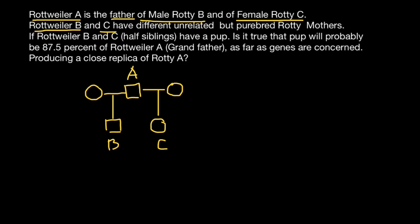Rottweiler B and C have different, unrelated but pure breed Rottie mothers — exactly what we see on this pedigree. Rottweiler B and C are half siblings. They have a pup, so let's add the pup here. We use a double line to show consanguinity mating — mating of two close relatives — and here is the result. The pup is of unspecified sex, shown with a diamond symbol. This is generation one, generation two, and generation three.